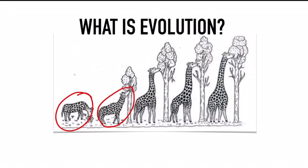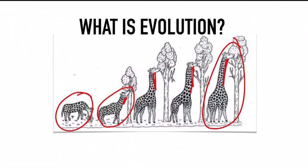Over thousands of years, the giraffe's family's neck got longer and longer. As you can see, this giraffe has a slightly longer neck, this one has a slightly more longer neck, and so on. This evolution of the giraffe's neck happened over millions of years. In today's world, the giraffe is the animal with the longest neck and it eats only leaves of very tall trees.